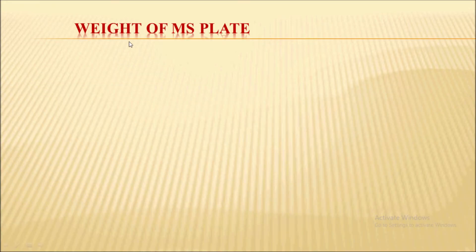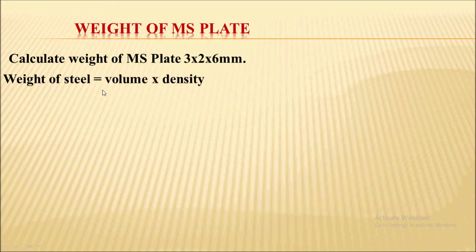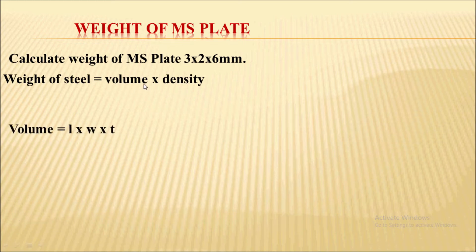First, weight of mild steel plate. Example: calculate the weight of mild steel plate that is 3 meter by 2 meter by 6 mm thick. The weight of steel is nothing but volume multiplied by density of steel. So what is the volume for a plate?